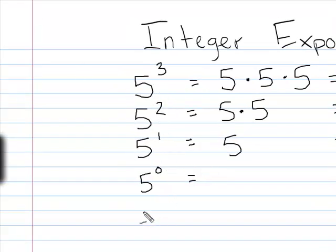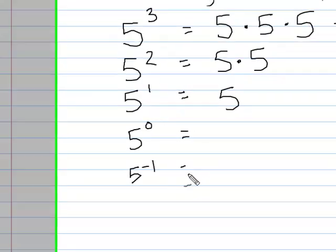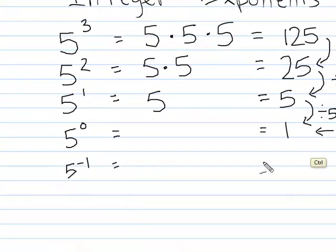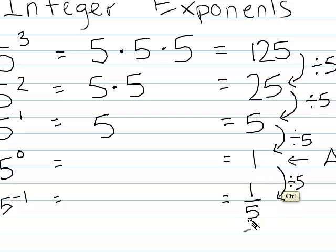Next in the pattern is five to the negative one power. To find out what five to the negative one power is, I'm going to continue with this pattern of dividing by five each time. One divided by five — we can write it as one-fifth, which is another way of writing one divided by five.